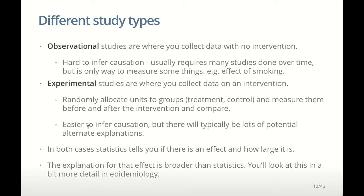Now when we do a study, there are two main types. The first is observational studies, where we collect data without an intervention — we just observe the world and note down what we see. The second are experimental studies, where we interfere with the world and set it up so we can assess whether our interference changed things or not. With experimental studies we randomly allocate units to groups, mess with one or more groups and not another, in order to assess whether the intervention affected the groups differently.